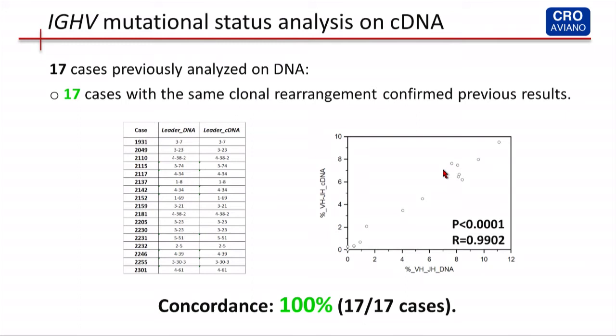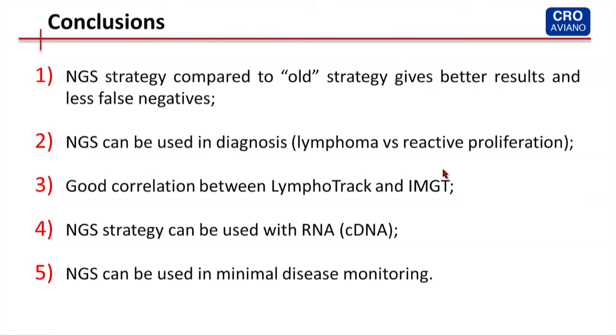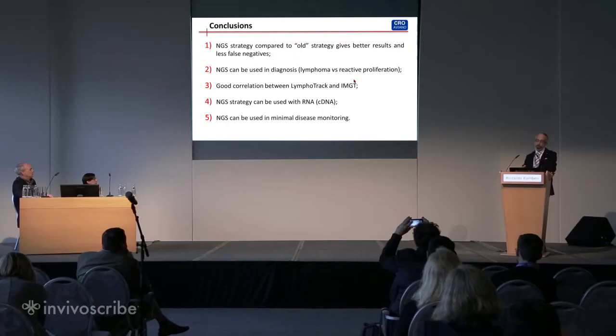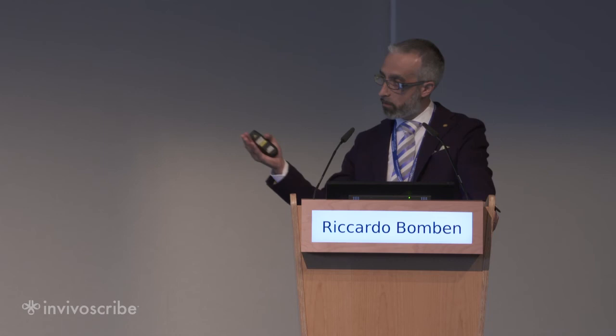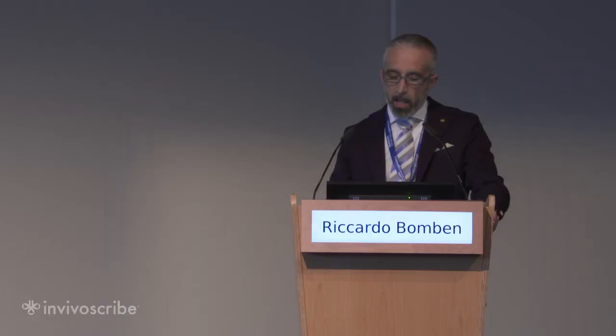To conclude: the NGS strategy compared to the old strategy gives better results and fewer false negative cases. NGS can be used in diagnosis — lymphoma versus reactive proliferation — and we have a perfect correlation between Lymphotrack and IMGT in the definition of mutated and unmutated patients. The NGS strategy in our hands can be used both with DNA and with RNA, and as noted before, NGS can also be used in minimal residual disease assessment.